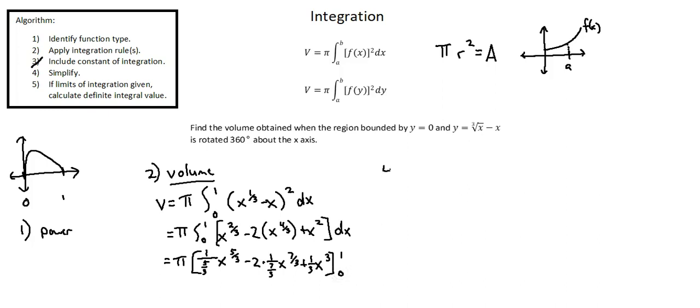Step four, simplify. Volume equals pi times. One over five thirds is three over five times x to the power of five over three.